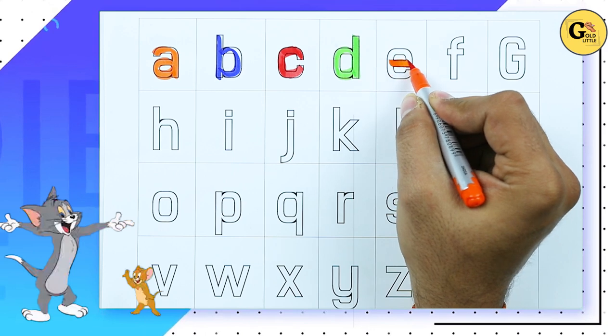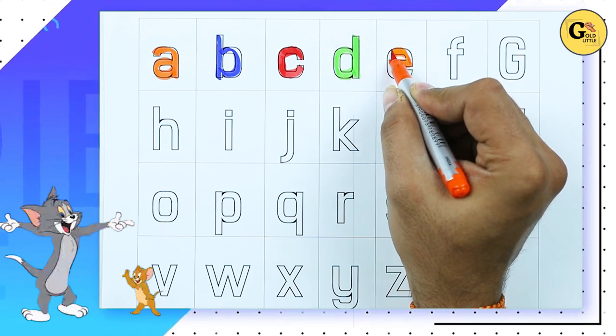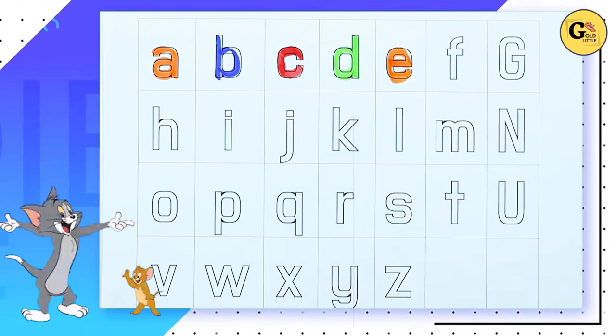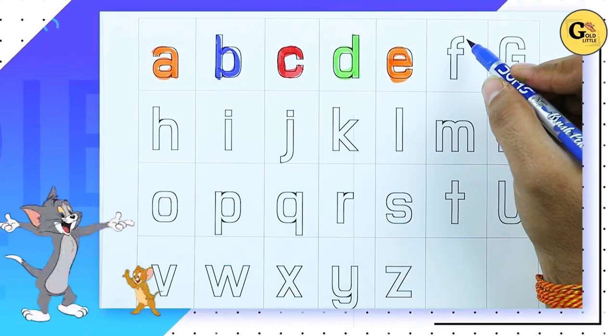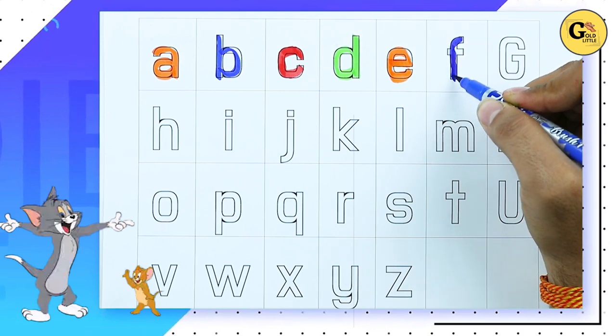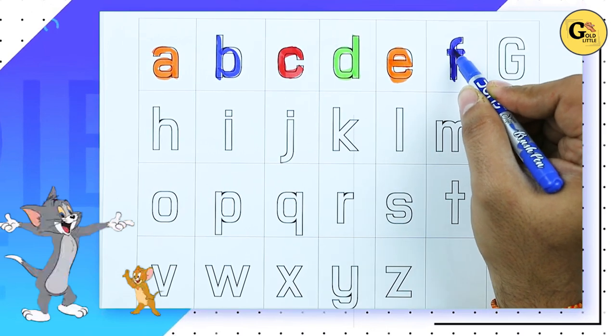E. Tell me E for Elephant. Right. E for Elephant. F. F for Fees. It's F. F for Fees.